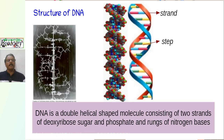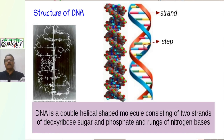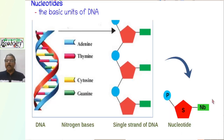Let us discuss the detailed structure of DNA. DNA is a double-stranded structure. The two strands are made of deoxyribose, a 5-carbon sugar, and phosphate groups. The rung-like parts are made up of nitrogen base pairs. A nucleotide contains mainly a 5-carbon sugar — here it is deoxyribose — a phosphate group, and a nitrogen base. There are four nitrogen bases: adenine, thymine, cytosine, and guanine.